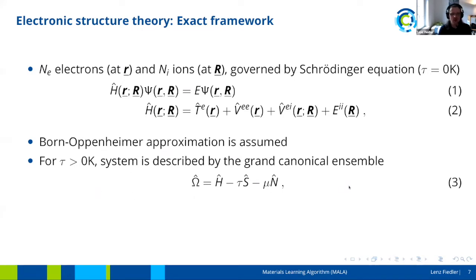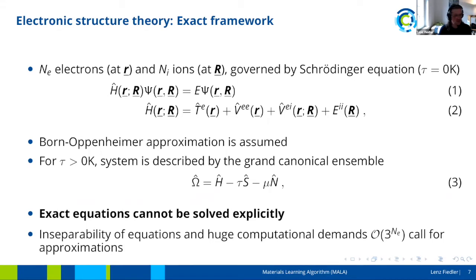We have to move from the Schrödinger equation to the grand canonical ensemble for systems at temperatures above zero Kelvin, which is what we're generally interested in, especially in the context of matter under extreme conditions. We have to take into account not only the entropy operator but also the particle number operator with the chemical potential. These are the exact equations one would have to think about, but they cannot be solved explicitly — they result in inseparable equations with a huge computational demand that scales as order N_e to the power of three, which is unfeasible even for small systems and calls for approximations.